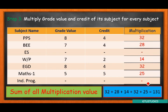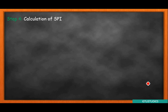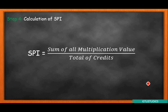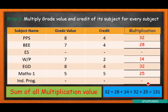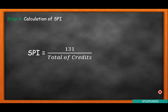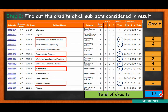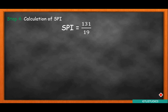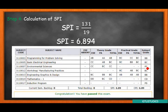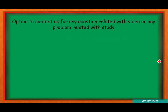જે grade આવ્યો છે, તેની grade value ઉપર multiplication કરવાની છે. Grade value નો multiplication = 131 અને credit = 19. 131 ÷ 19 = SPI. એ આંસર જોઈ શકો છો.